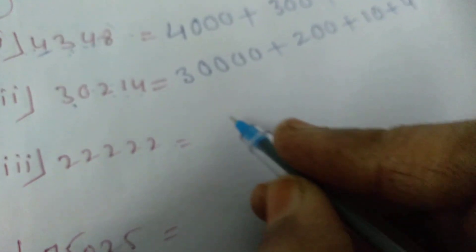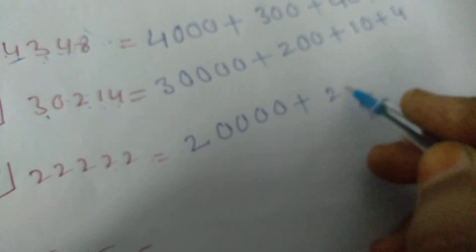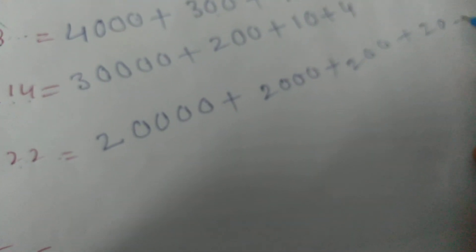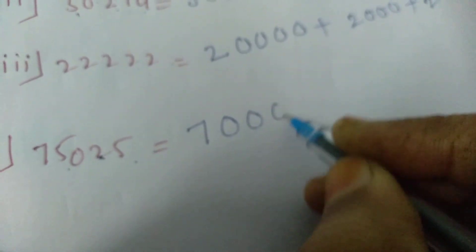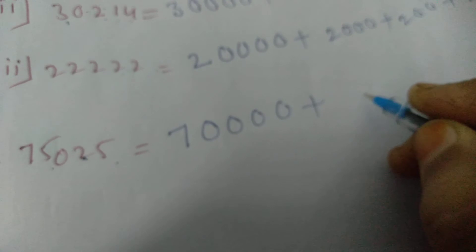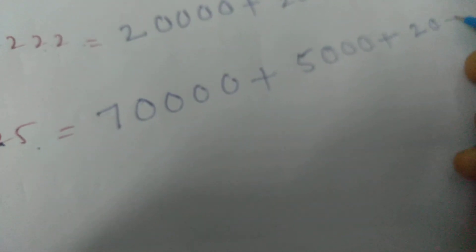Here is 22,220. Write it as 20,000 plus 2,000 plus 200 plus 20 plus 2. Next one: 75,025. 70,000 — ten-thousands place has 4 zeros — plus 5,000 — thousands place has 3 zeros — plus 20 plus 5.